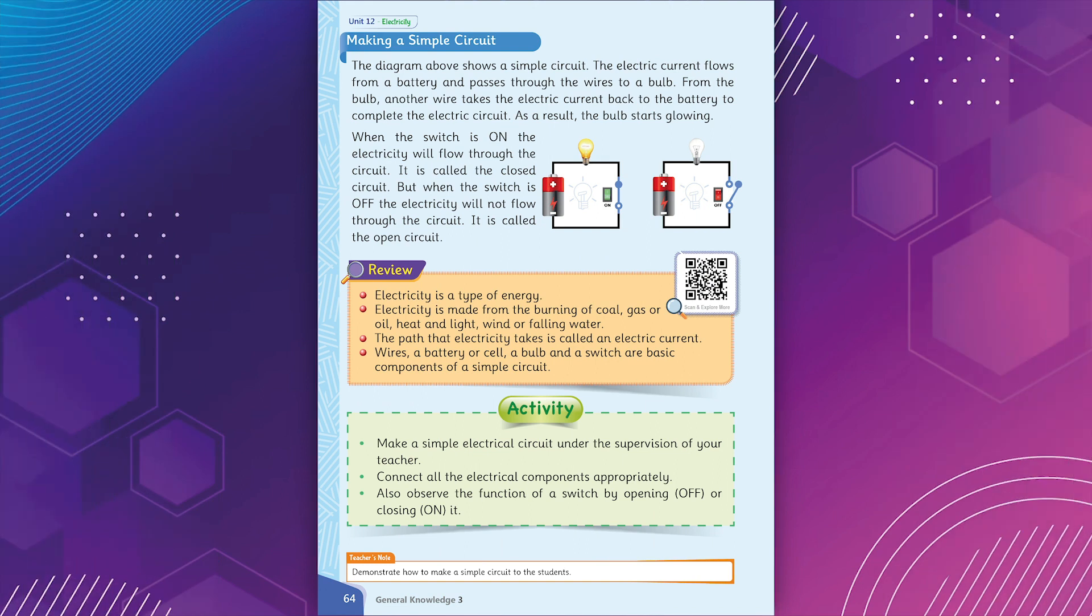Making a Simple Circuit. The diagram above shows a simple circuit. The electric current flows from a battery and passes through the wires to a bulb. From the bulb, another wire takes the electric current back to the battery to complete the electric circuit. As a result, the bulb starts glowing.